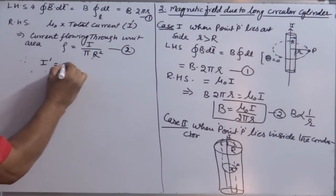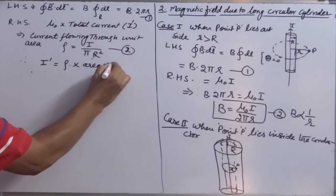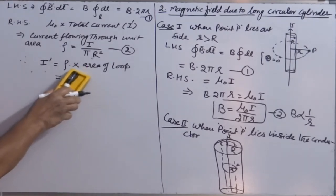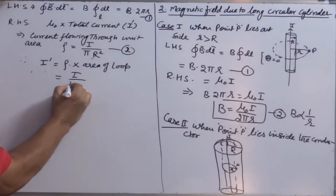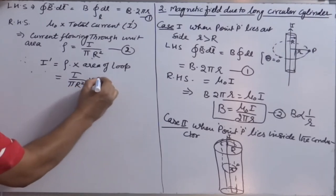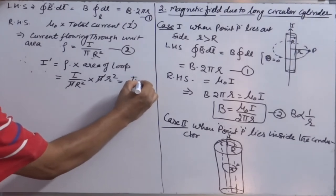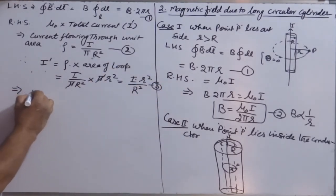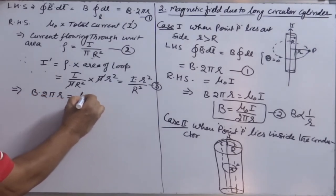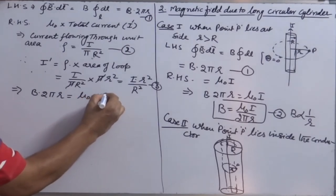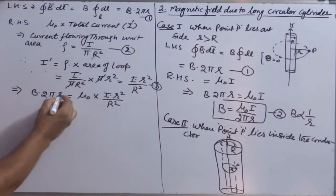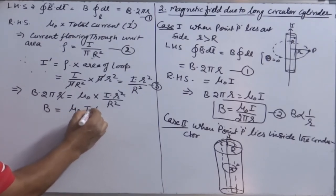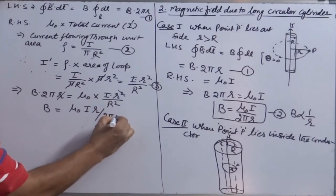Then I-dash = ρ × area of loop = (I over π·R²) × π·r² = I·r² over R². Equating LHS and RHS: B·2πr = mu naught·I·r² over R². One r cancels, giving B = mu naught·I·r over 2π·R². Inside the conductor, B is directly proportional to r. At the surface, B will have maximum value. Since the conductor is solid material (not air), we should use mu naught·mu_r·I·r over 2π·R².